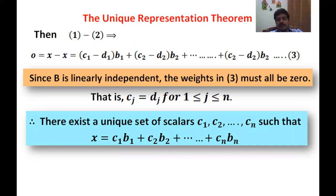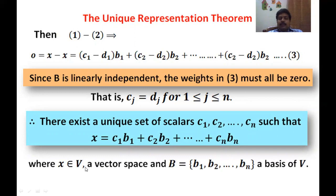Therefore, there exists a unique set of scalars C1, C2, ..., Cn such that X = C1·V1 + C2·V2 + ... + Cn·Vn. Whenever X is in vector space V and B is a basis with n vectors B1, B2, ..., Bn, there is only one representation for each vector X as a linear combination of these vectors. These unique numbers C1, C2, ..., Cn will form our coordinate system.